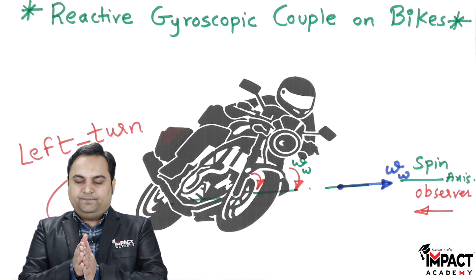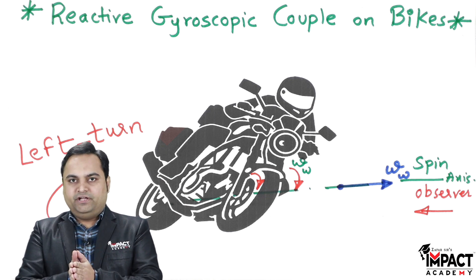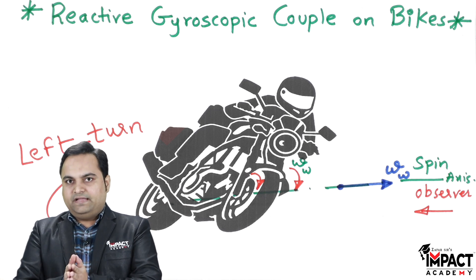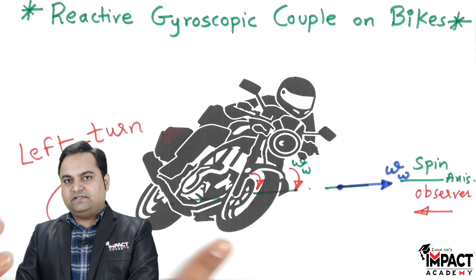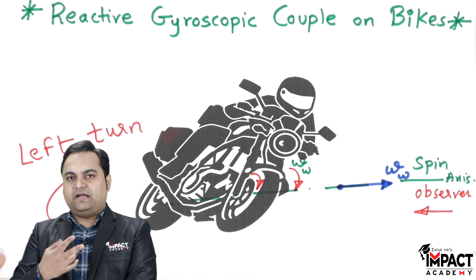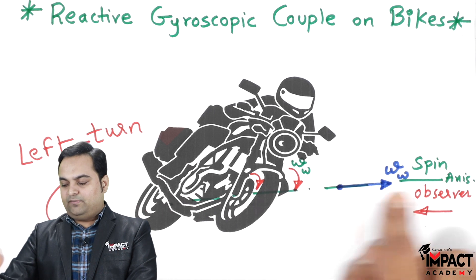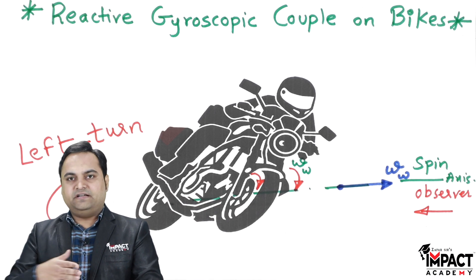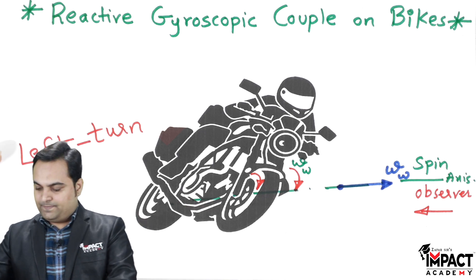If the biker was moving on a straight road and not taking a turn, the precession velocity would not be present. But since the rider is taking a left turn, the wheel is rotating in an anti-clockwise manner while the rider is simultaneously turning, so two rotations are happening at the same time. The rotation of the wheel is about the spin axis, while the left turn is about a vertical axis called the precession axis.